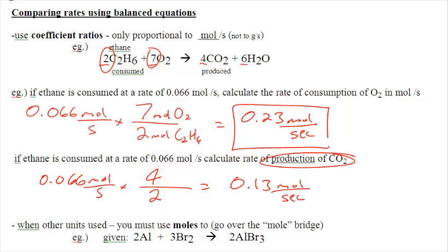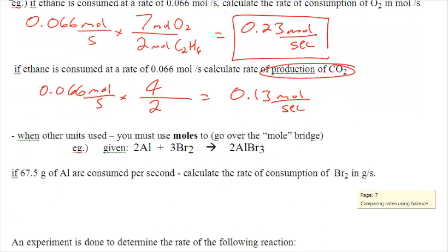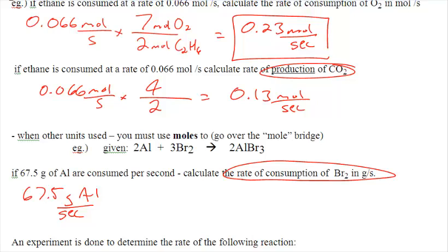Now obviously not everything is going to be moles to moles. We are going to be using grams and a couple other units as well. Let's try a grams question and then we will stop here. So 67.5 grams of Al. That is what we are starting with. They are consumed per second. Calculate the rate of Br2 in grams.